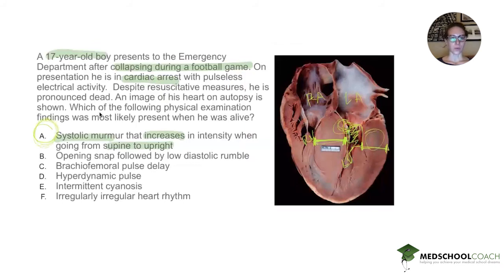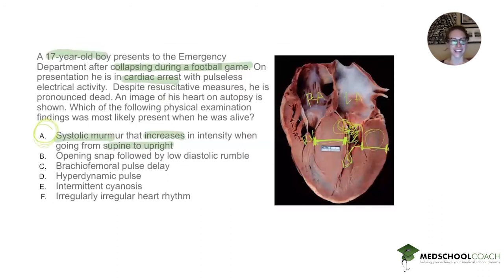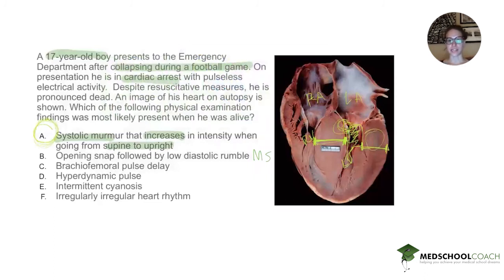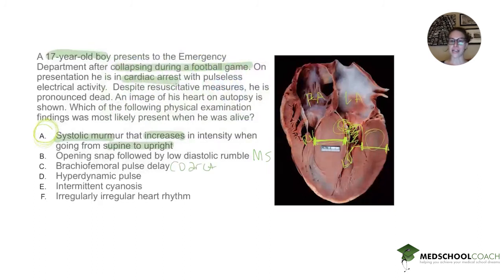Let's go through the other answer choices. An opening snap followed by a low diastolic rumble is mitral stenosis — a diastolic murmur occurring when the mitral valve is open during diastole and blood is being pushed through that stenotic valve. Brachiofemoral pulse delay is seen in coarctation of the aorta. A hyperdynamic pulse — or water hammer pulse — is seen in aortic regurgitation, where blood goes out and then comes back in, creating that whoosh-whoosh quality.